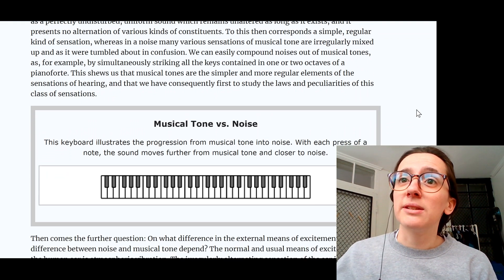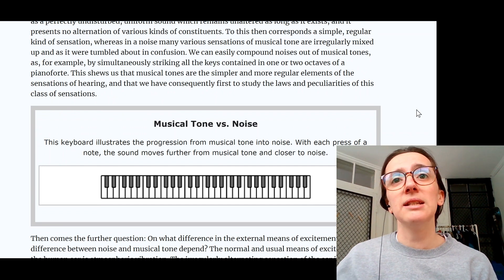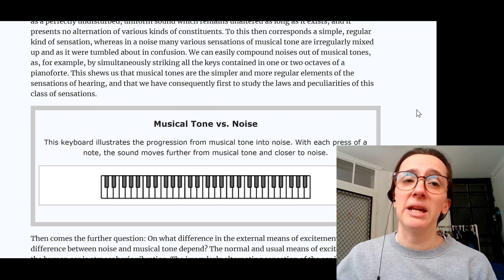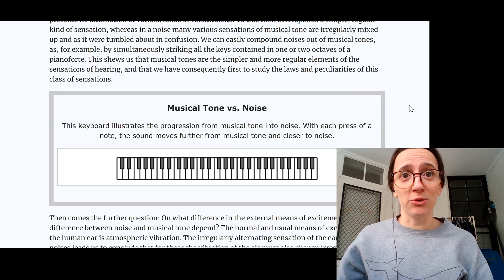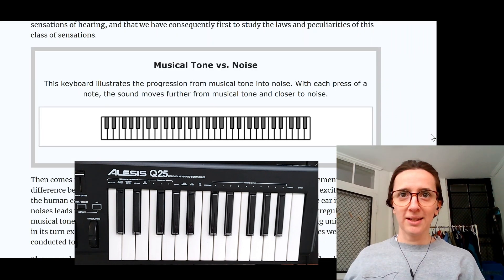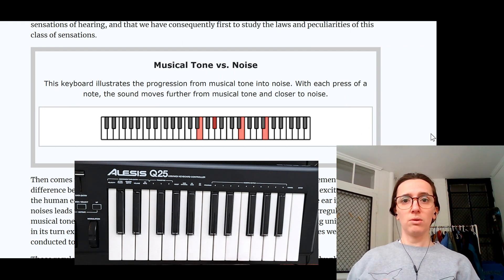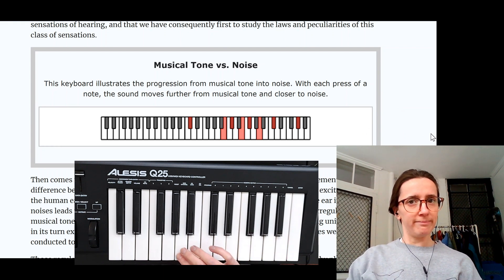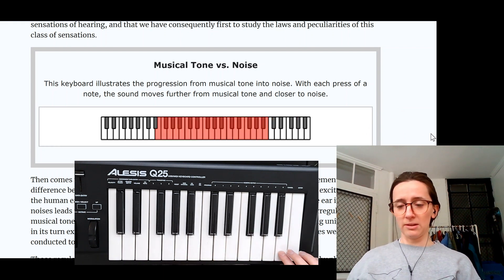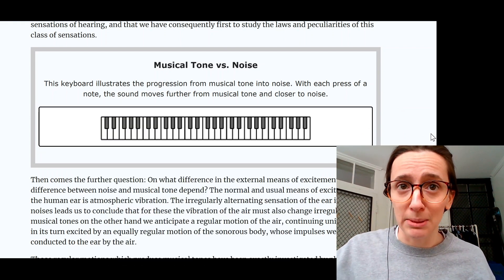We can easily compound noises out of musical tones, as for example, by simultaneously striking all the keys contained in one or two octaves of a pianoforte. And with this app, we can actually do that. Not on a pianoforte, but on my MIDI keyboard. Let's start with middle C. And add E. Okay, that's definitely noise. Doesn't take very many presses of the key to become noise.